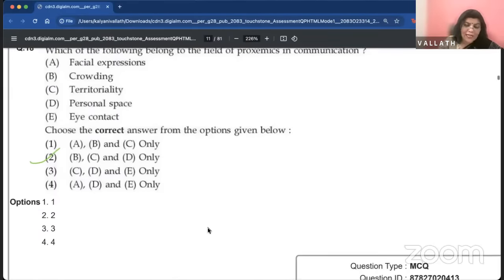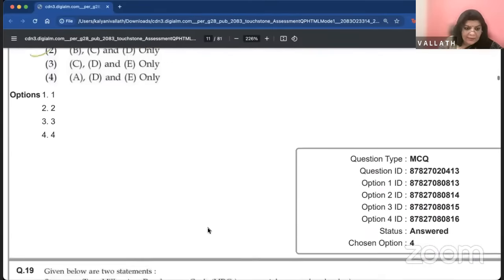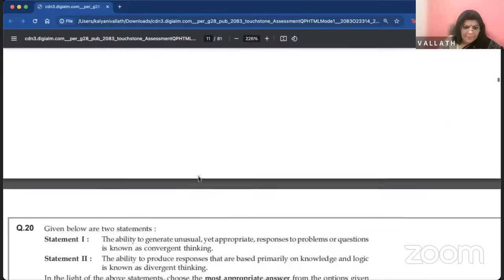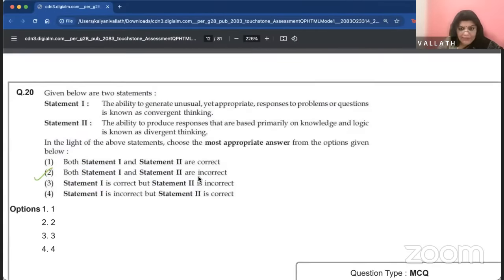Which of the following was recommended by the Hunter Commission? Answer is participation of private enterprise in higher education. Which of the following belong to the field of proxemics in communication? B, C and D. Crowding, territoriality and personal space. Facial expression and eye contact are not proxemics.